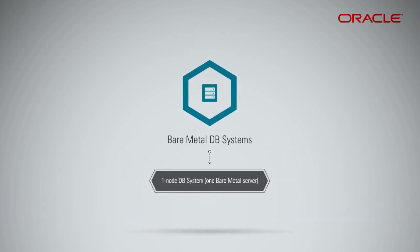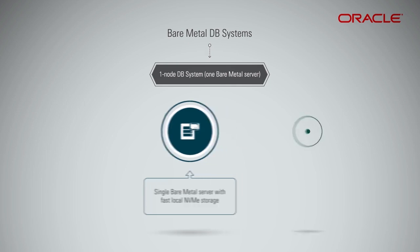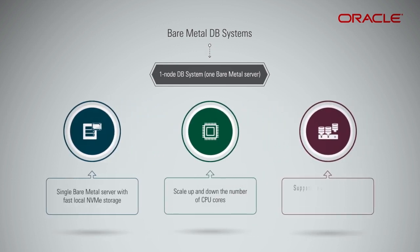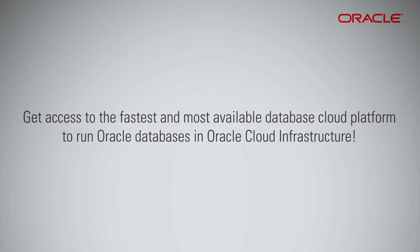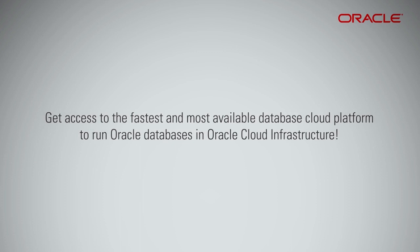Bare Metal DB systems consist of a single bare metal server with fast local NVMe storage, ideal for OLTP systems with fast commit requirements. Scale up and down the number of CPU cores to optimize Oracle licenses and only pay for what is needed. A bare metal DB system supports multiple databases and multiple versions on the same DB system, providing the fastest and most available database cloud platform to run Oracle databases in Oracle Cloud Infrastructure.